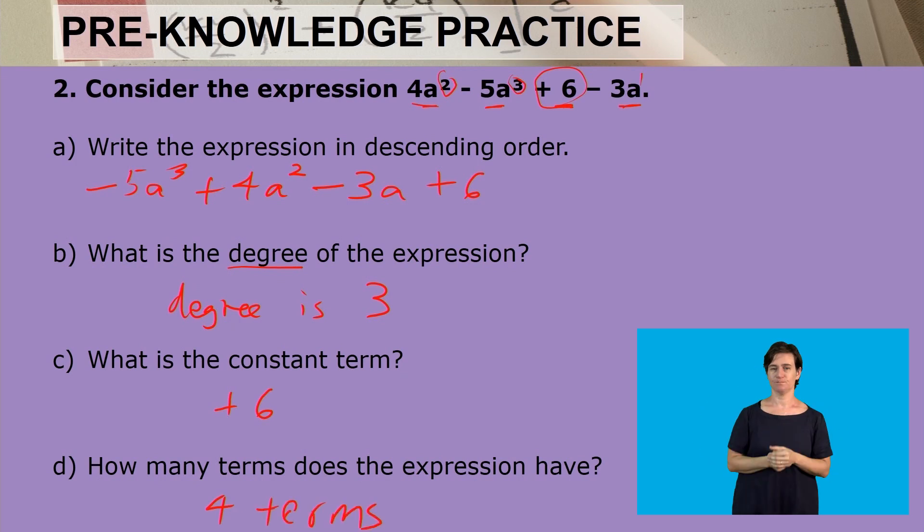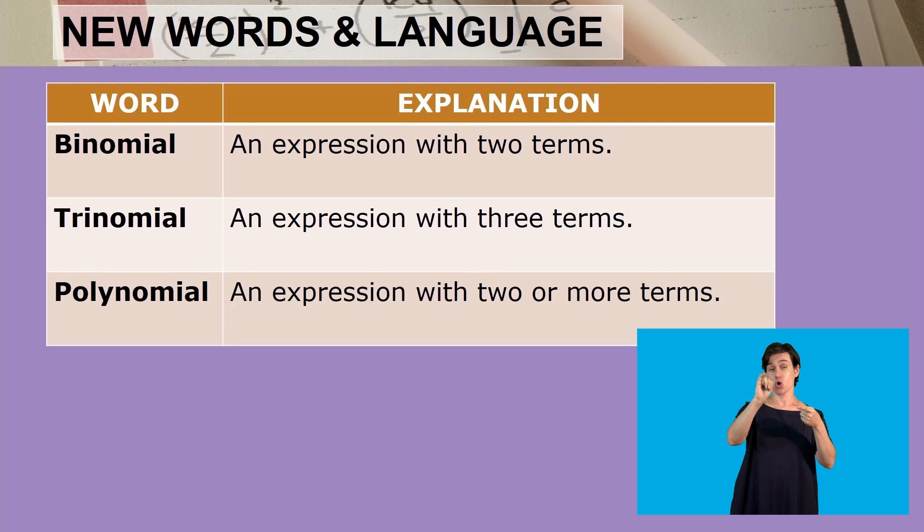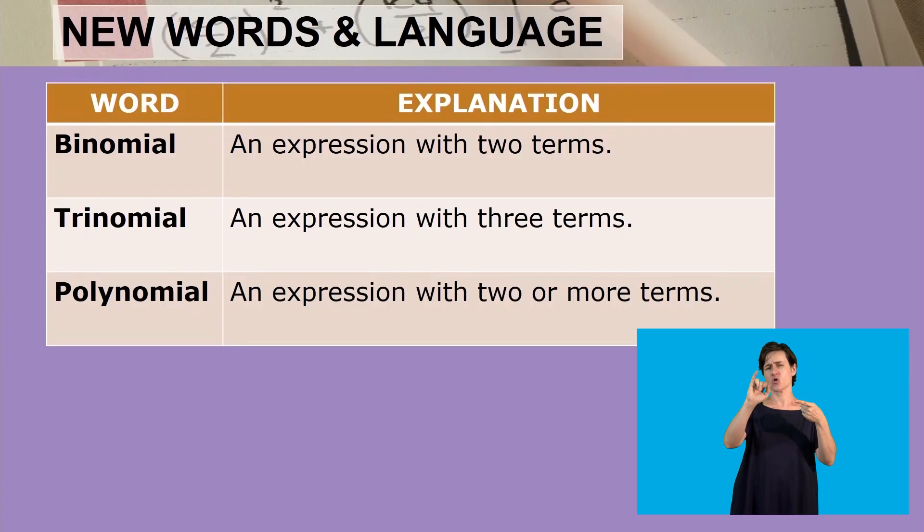All right, our new words for today. The first word is binomial. These are words that we've just been speaking about and they are words that we are going to use as we continue with this lesson. A binomial then is an expression that has two terms. Let's make an example: x plus 4 is a binomial. Y minus 5x is also a binomial.